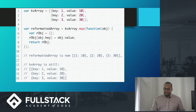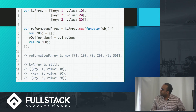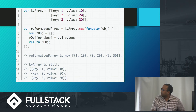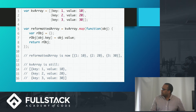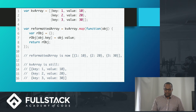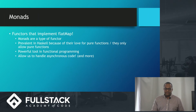Here's another very simple example. You can see it just takes out the key and the value out of the array. I think you guys get the essence of what a functor is.